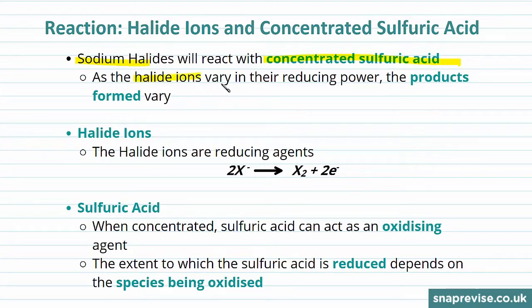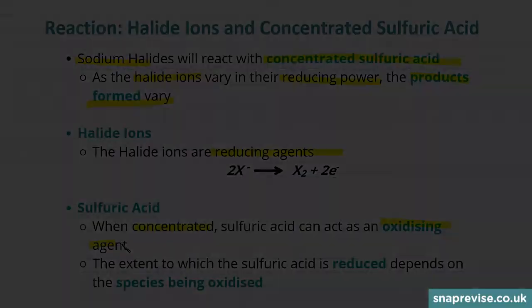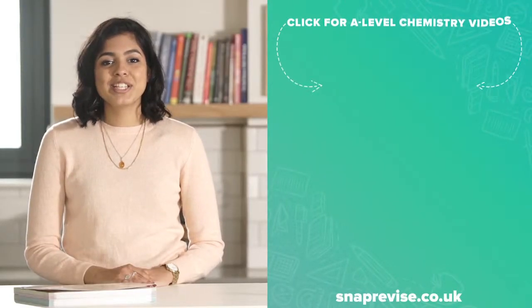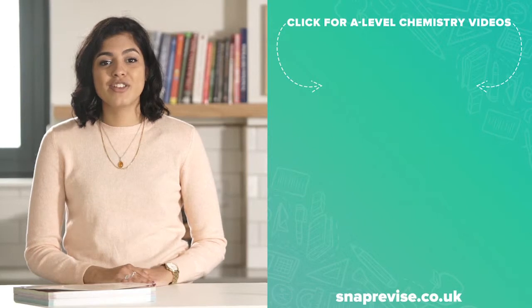As the halide ions vary in their reducing power, the products formed vary. The halide ions are reducing agents — they reduce other species whilst they themselves are oxidized. Sulfuric acid, when concentrated, acts as an oxidizing agent.